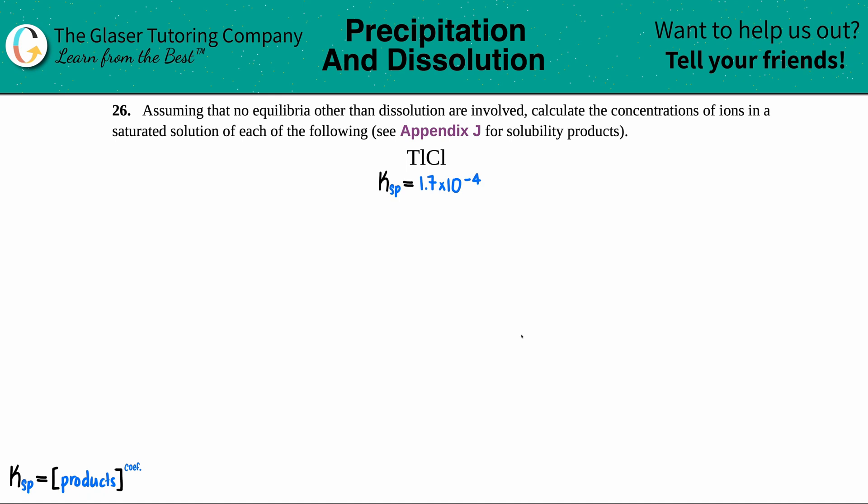Number 26. Assuming that no equilibria other than dissolution are involved, calculate the concentrations of the ions in a saturated solution of each of the following. See Appendix J for solubility products. And then we have TlCl.